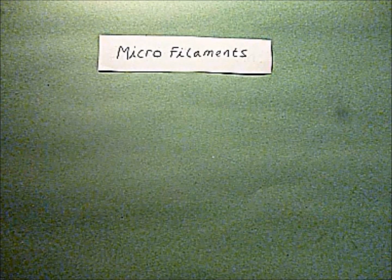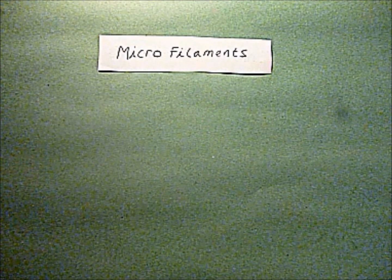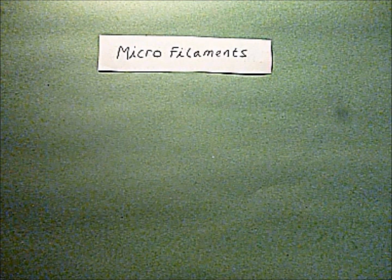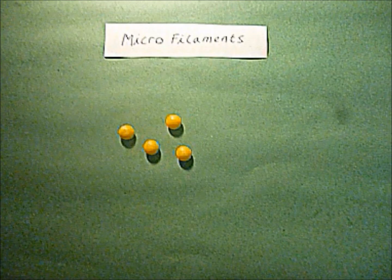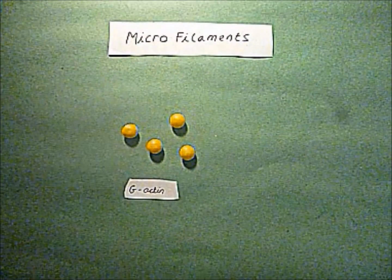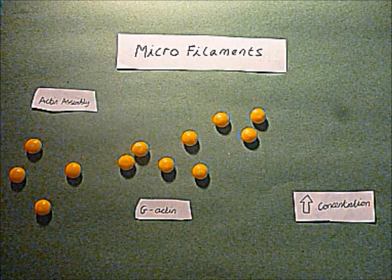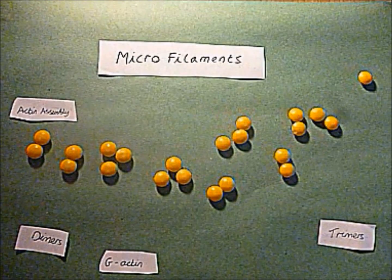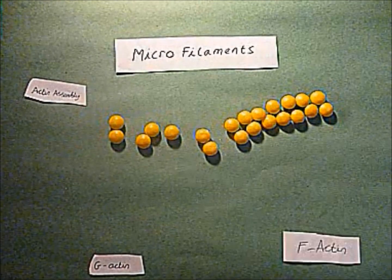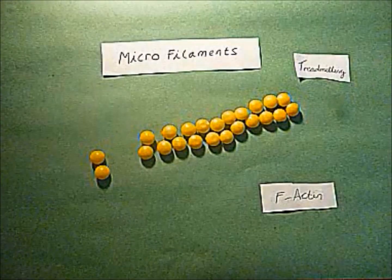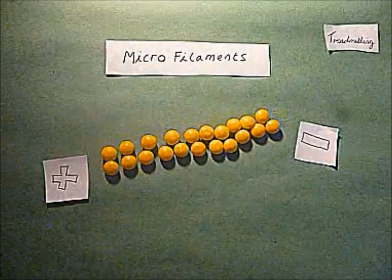Microfilaments consist of the globular G-actin monomers and assemble into F-actin polymers in increasing ionic concentrations. The process also hydrolyzes ATP. Assembly begins with dimers and trimers forming into fibrous proteins, the chain elongating quicker at the positive end. Actin dissociates less readily when bound to ATP.